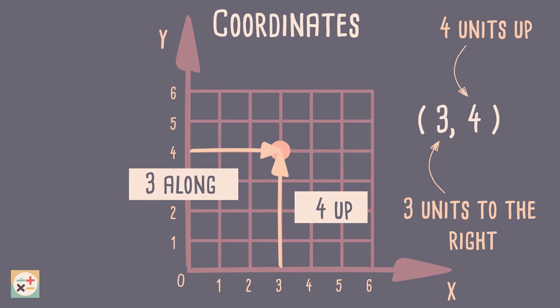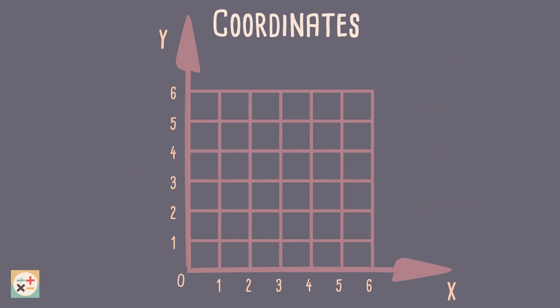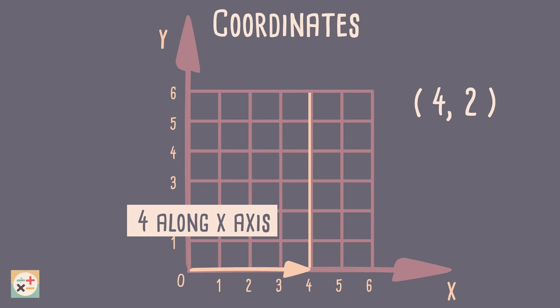Now let's have a look at how we would plot a point when we are given a coordinate. We can draw a line along by 4 units. The point is going to be somewhere vertically on this line. Now starting at 4 units across, we can draw a line 2 units up. This is where we can accurately plot the point.